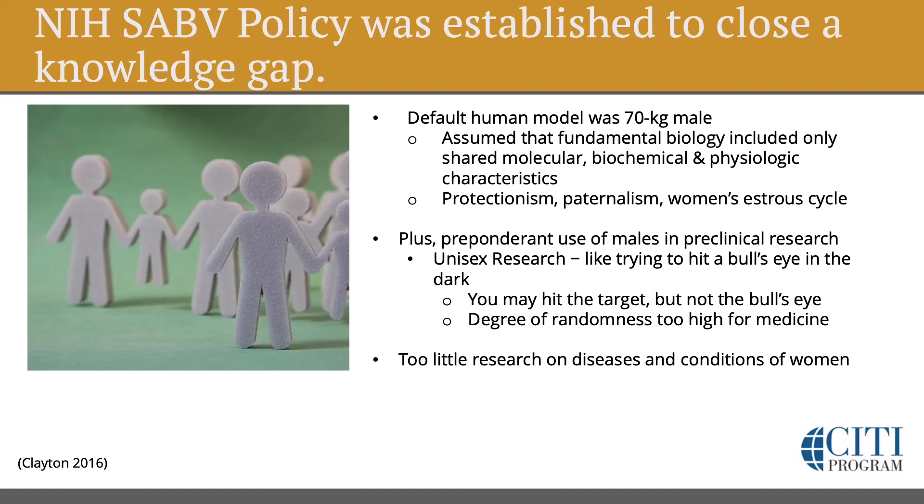There are three facets of this knowledge gap. First, the default human model was a 70-kilogram male, with the assumption that fundamental biology included only shared molecular, biochemical, and physiologic characteristics. This assumption reflects a level of protectionism and paternalism — for example, it viewed the fact that women had an estrous cycle as a confounding variable in research studies. Another knowledge gap was the preponderant use of males in preclinical research. This type of unisex research is like trying to hit a bullseye in the dark — you might hit the target, but not the bullseye. This degree of randomness is too high for medicine and is not consistent with rigorous scientific investigation.